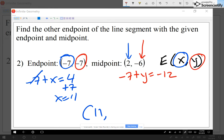So negative 7 plus y, it has to equal to twice the midpoint, so it has to equal to negative 12. Twice the midpoint. Now to solve for y, I'm gonna add 7 to both sides, so y is equal to negative 5.